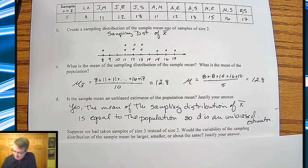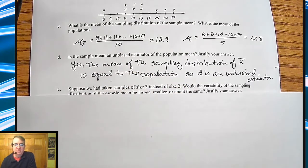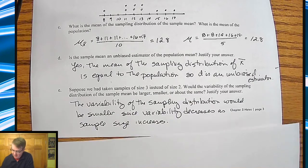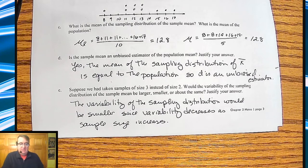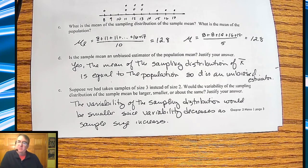So suppose we had taken sample sizes of three instead of size two. Would the variability of the sampling distribution be larger, smaller, or the same? As we talked about above, it would actually go smaller because variability decreases whenever you increase the sample size.